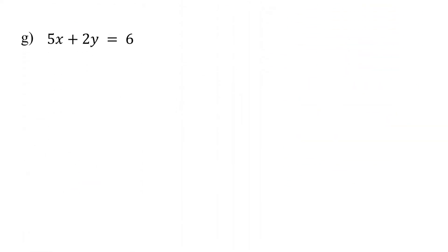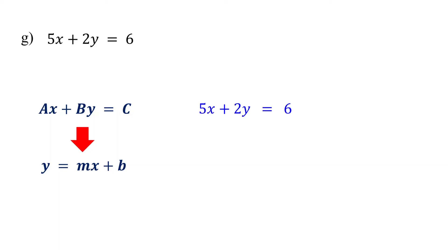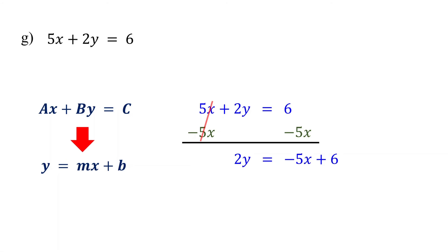Now, what if the equation is in standard form? First, convert the standard form to slope-intercept form by isolating y on one side of the equation. Start by subtracting the x term from both sides. On the left side, these cancel out, leaving 2y. On the right side, we get -5x + 6. We write the x term first, because in slope-intercept form, the x term comes first on the right side of the equation.